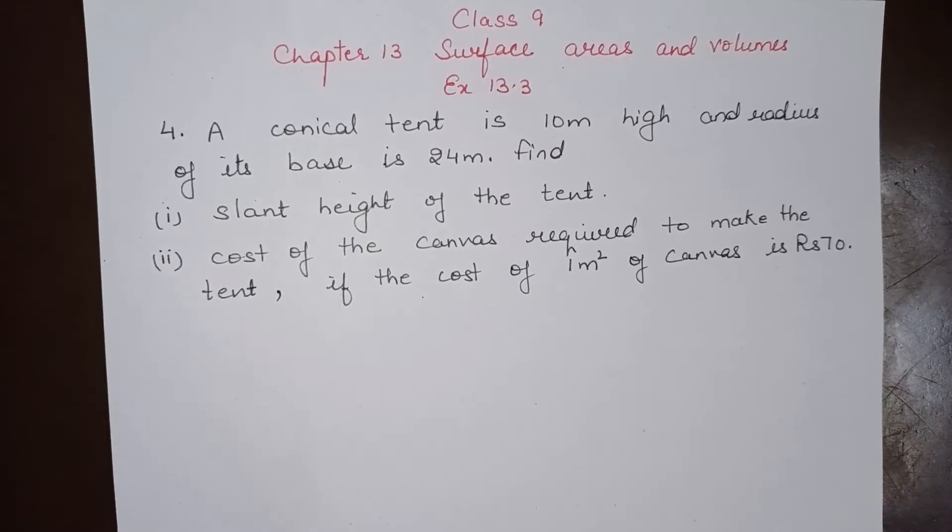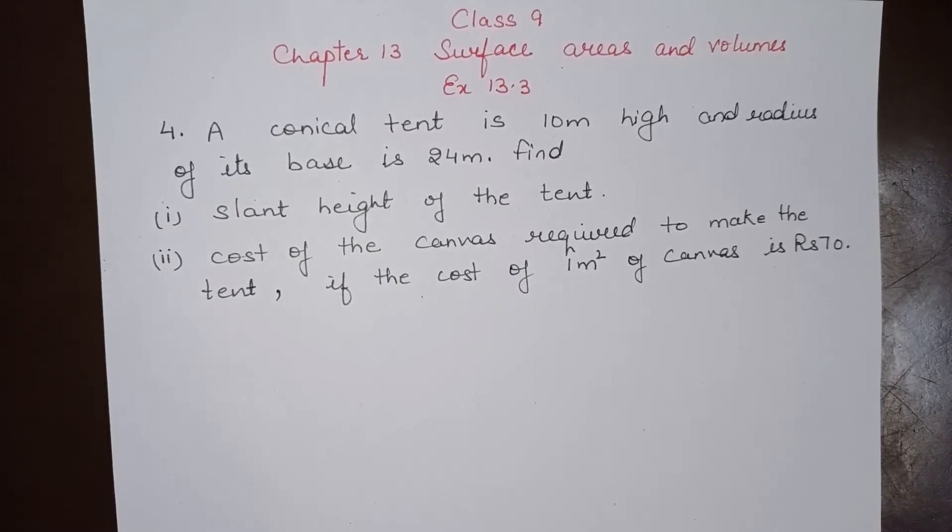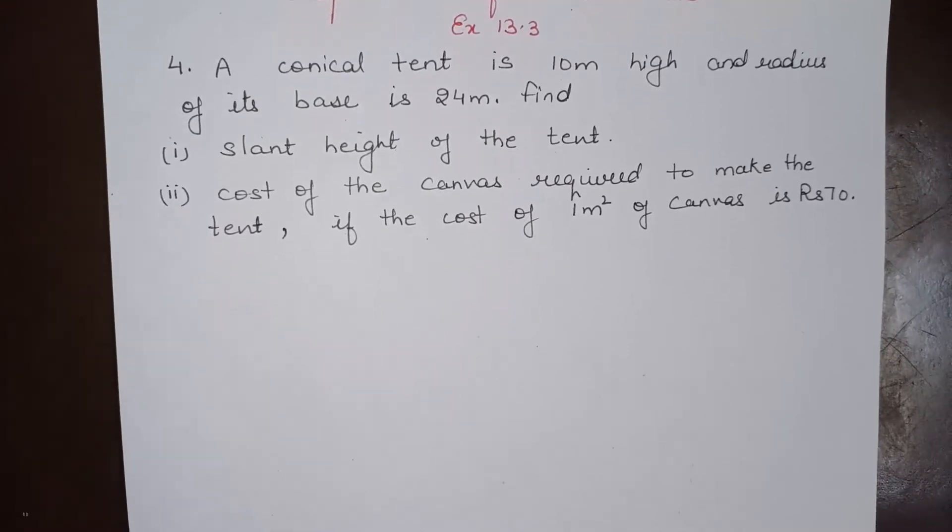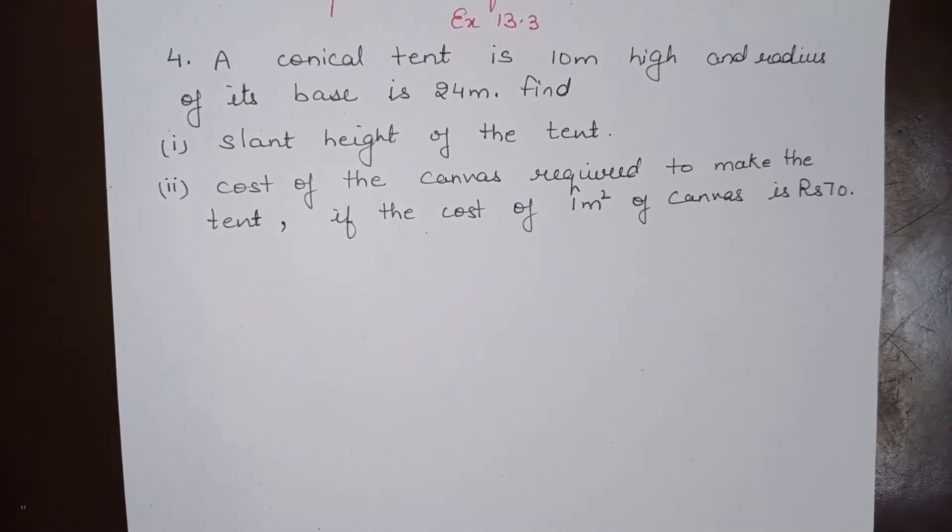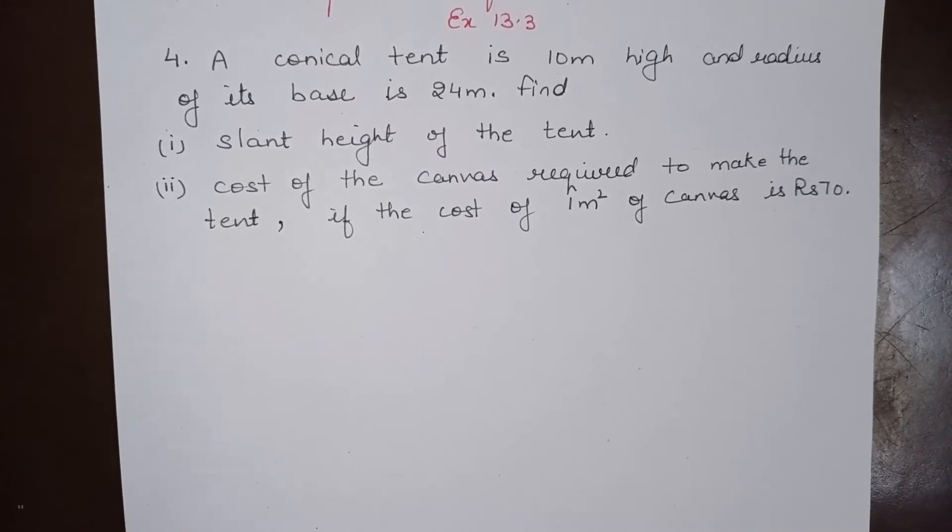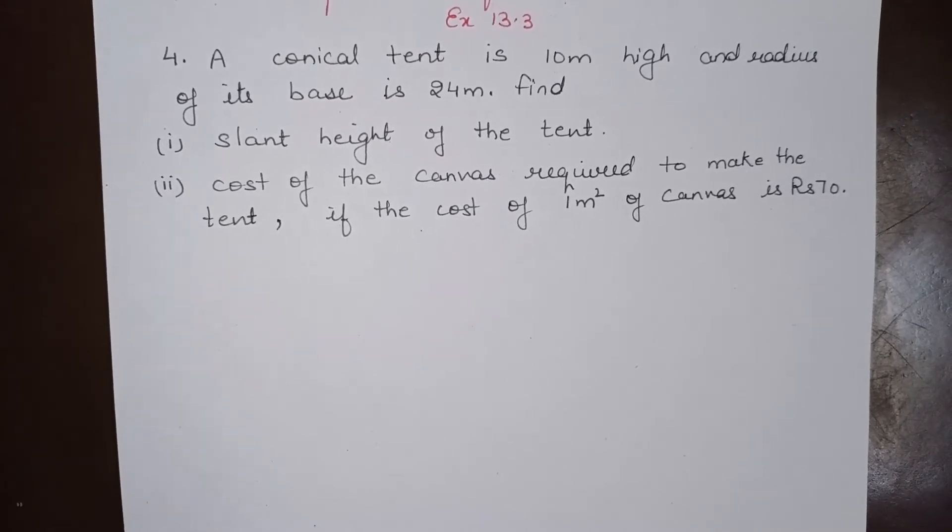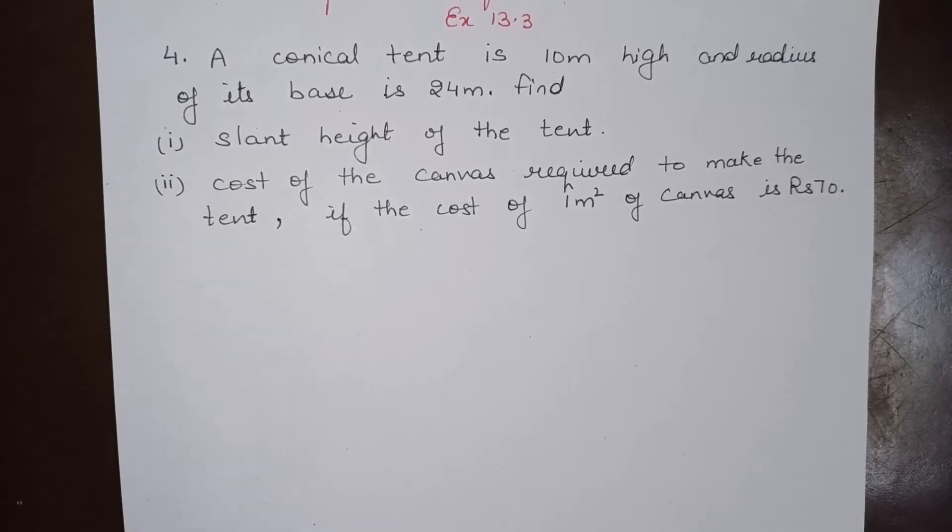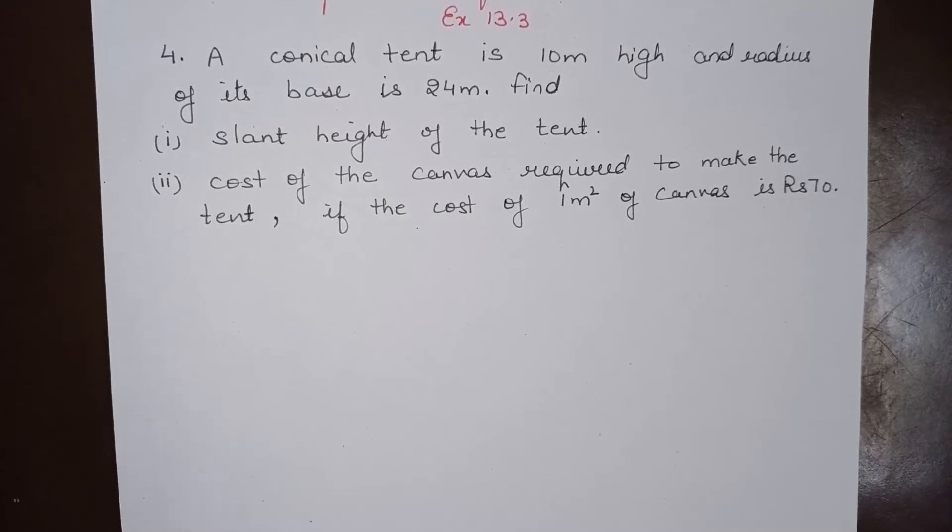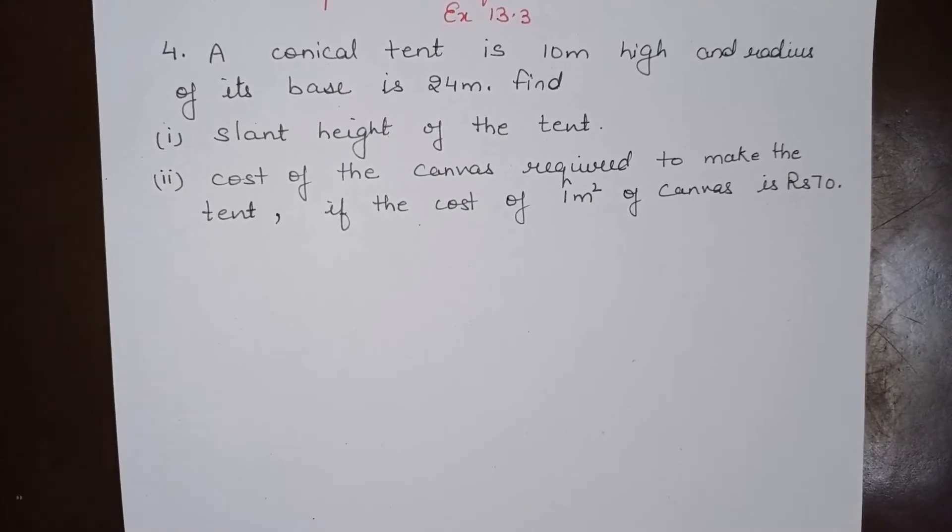Hello everyone, today we will do class 9th chapter 13 surface areas and volumes, exercise 13.3, question number 4. A conical tent is 10 meter high and radius of its base is 24 meter. Find the slant height of the tent and the cost of canvas required to make the tent if the cost of 1 meter square of canvas is rupees 70.